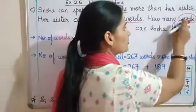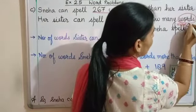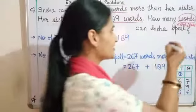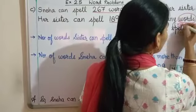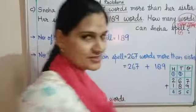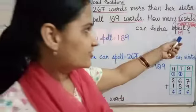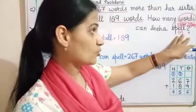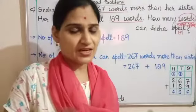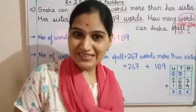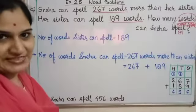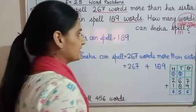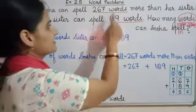Now — how many words can Sneha spell? Words ko humne circle kiya hai. Ab dekhiye — Sneha bol rahi hai apni sister se bhi zyada words. So ask the question: words Sneha can spell — will be more or less? Sneha apni sister se bhi zyada words bol rahi hai, toh Sneha ke words more honge. So it is more, and whenever your collection is more it is plus. Sneha sister se zyada words bol rahi hai — so we know that it is a question of addition. Kya add karna hai? Information numbers ko add karna hai.